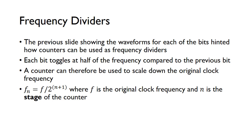The frequency of one of the counter outputs, f_n, is equal to f, the base frequency, divided by 2 to the power of n plus 1, where n is the stage of the counter.